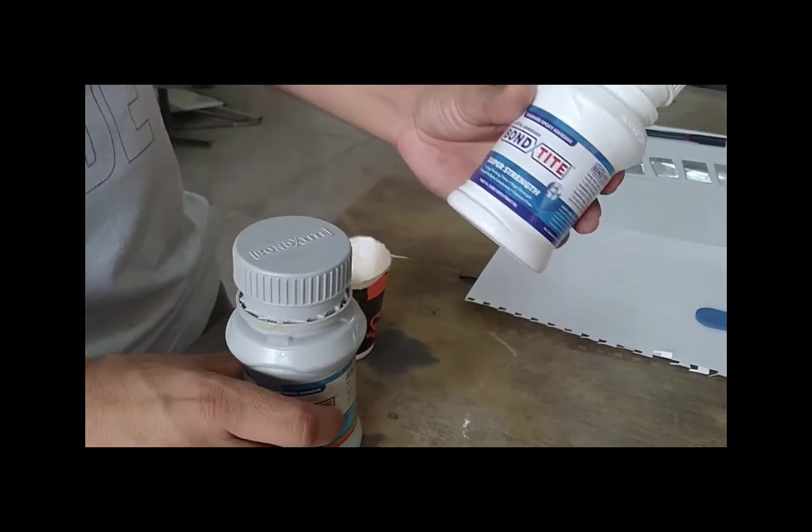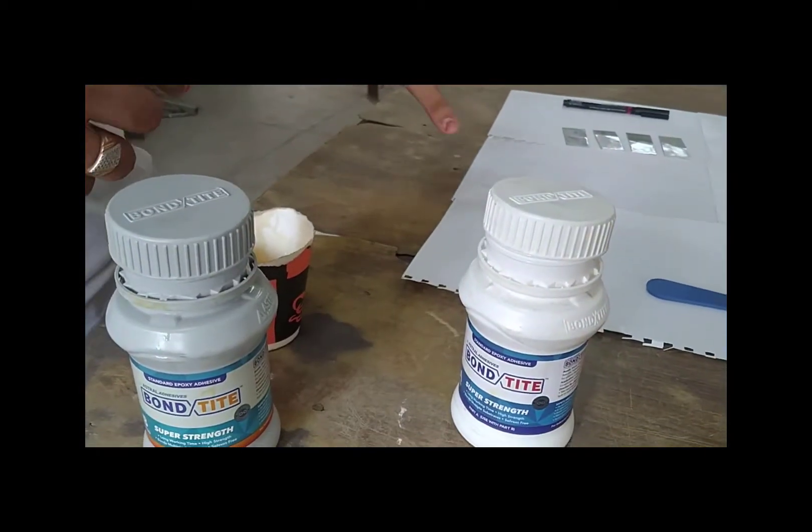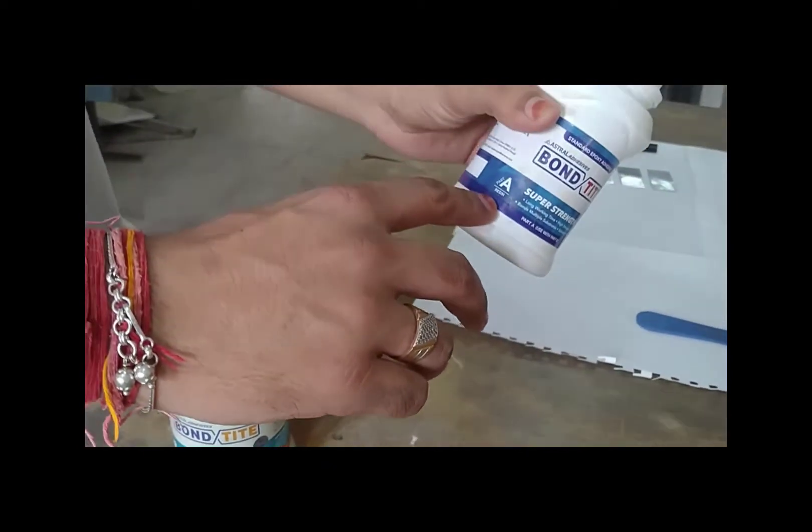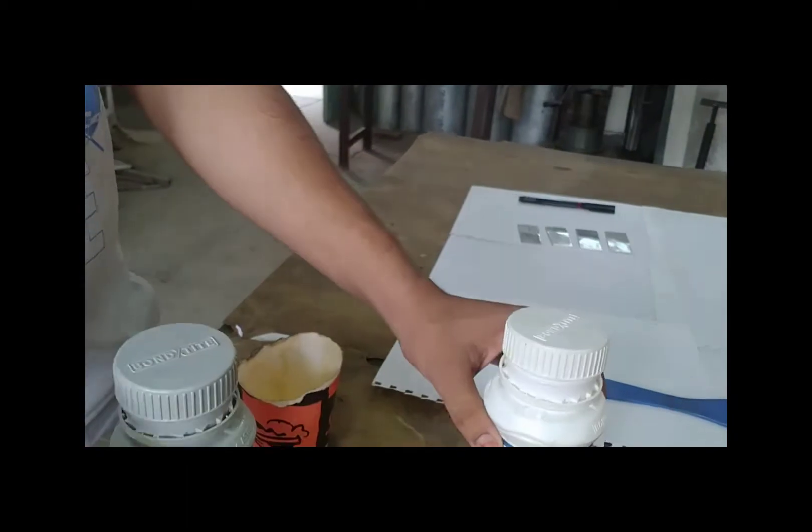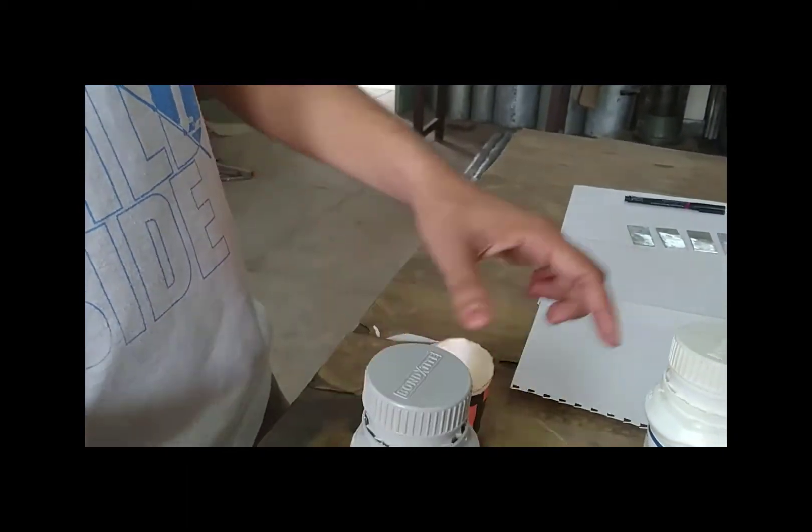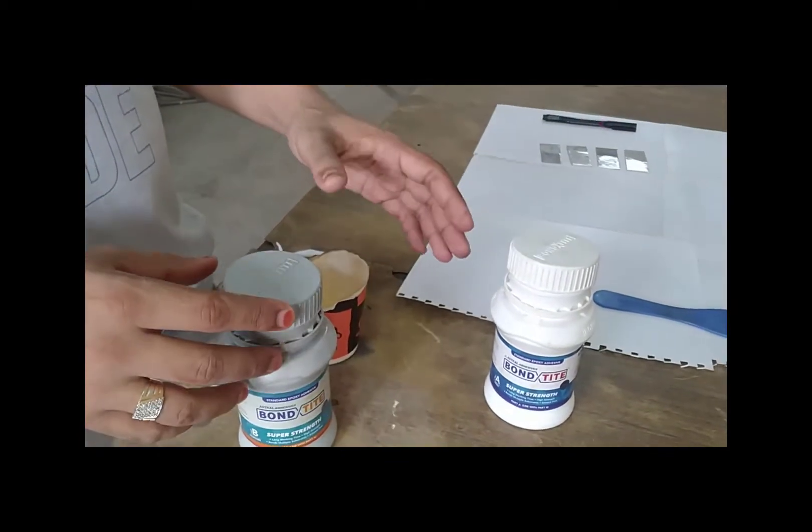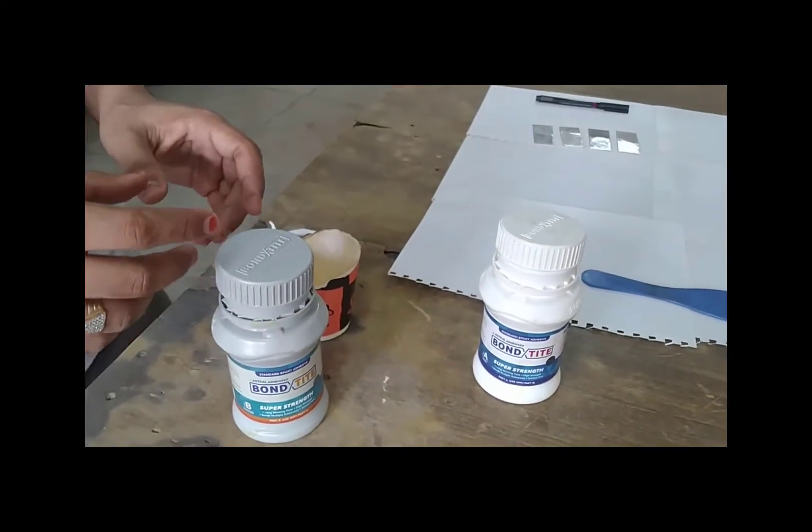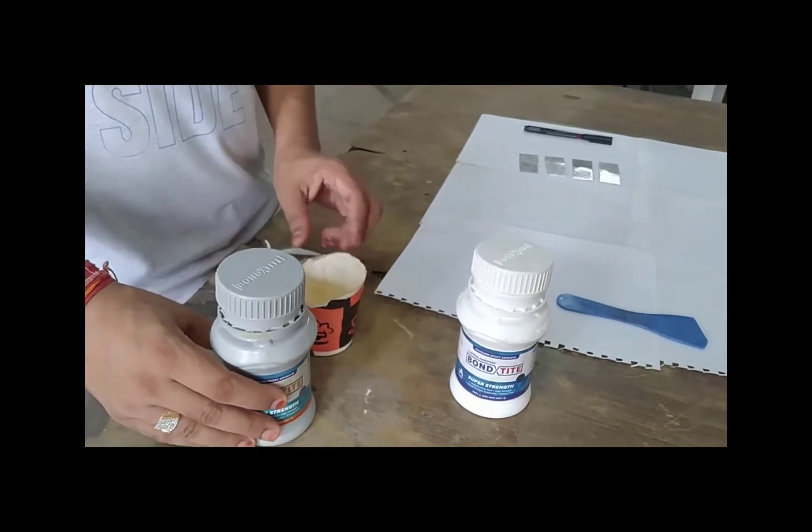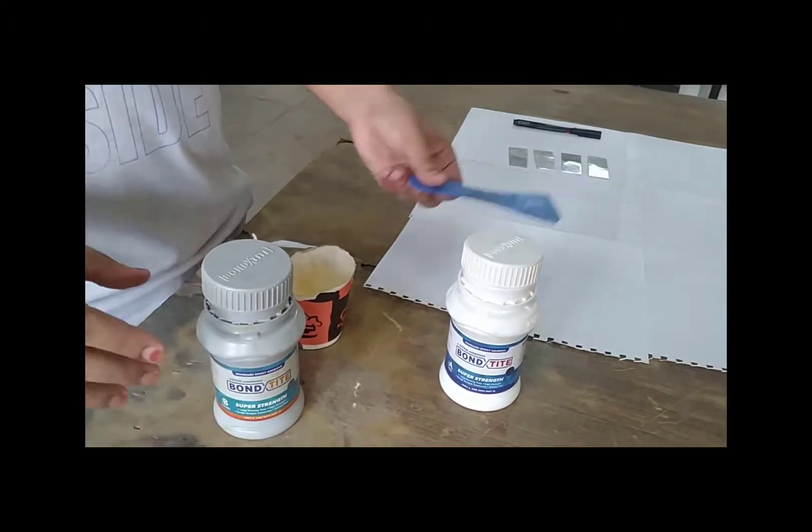These are the two components of adhesive to be mixed and applied on the sheets to be joined. This first component is Part A, the resin. The second one is Part B, the hardener. When we mix these in equal quantity, they form a paste which is very glue-like and acts as an adhesive for joining.